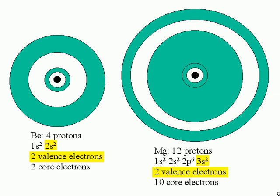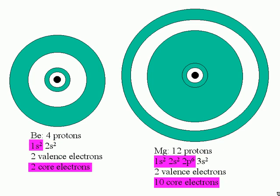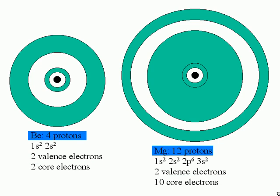Note that they both have two valence electrons. But magnesium has more electrons in the core and also has more protons.